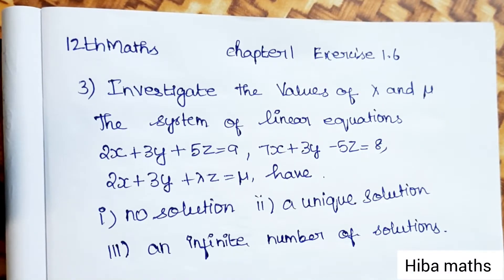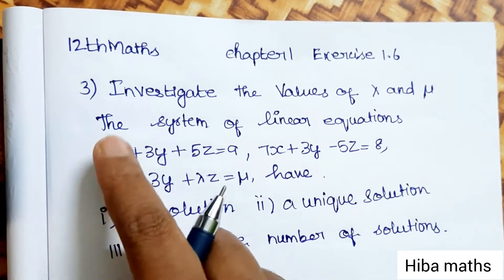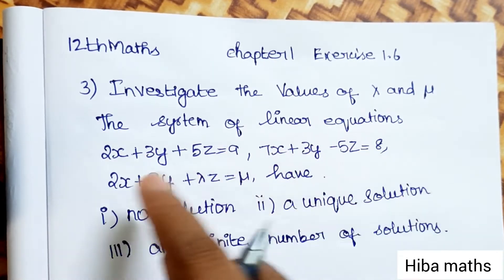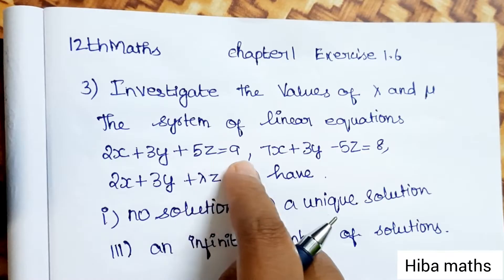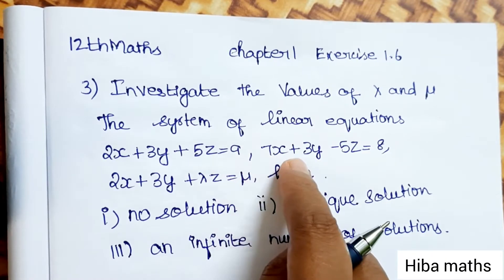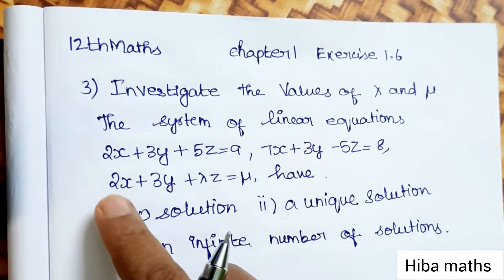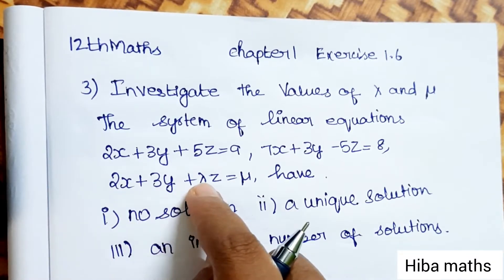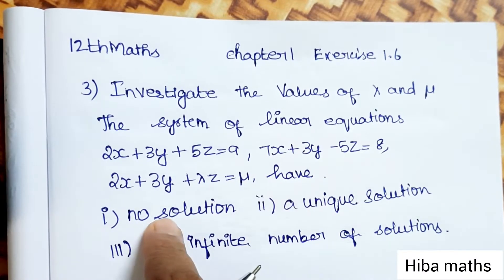Hello students, welcome to class. Chapter 1, Exercise 1.6, third question: investigate the values of lambda and nu for the system of linear equations 2x + 3y + 5z = 9, 7x + 3y - 5z = 8, 2x + 3y + λz = ν, to determine when it has no solution, unique solution, and infinite number of solutions.